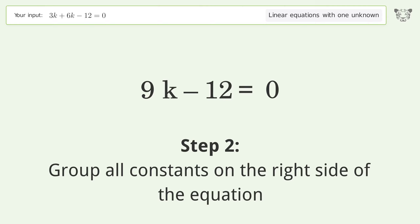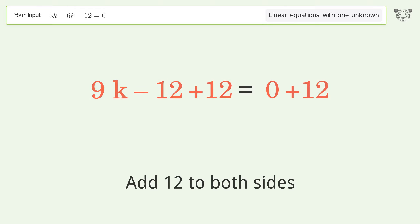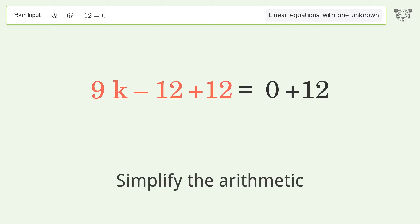Group all constants on the right side of the equation by adding 12 to both sides, then simplify the arithmetic.